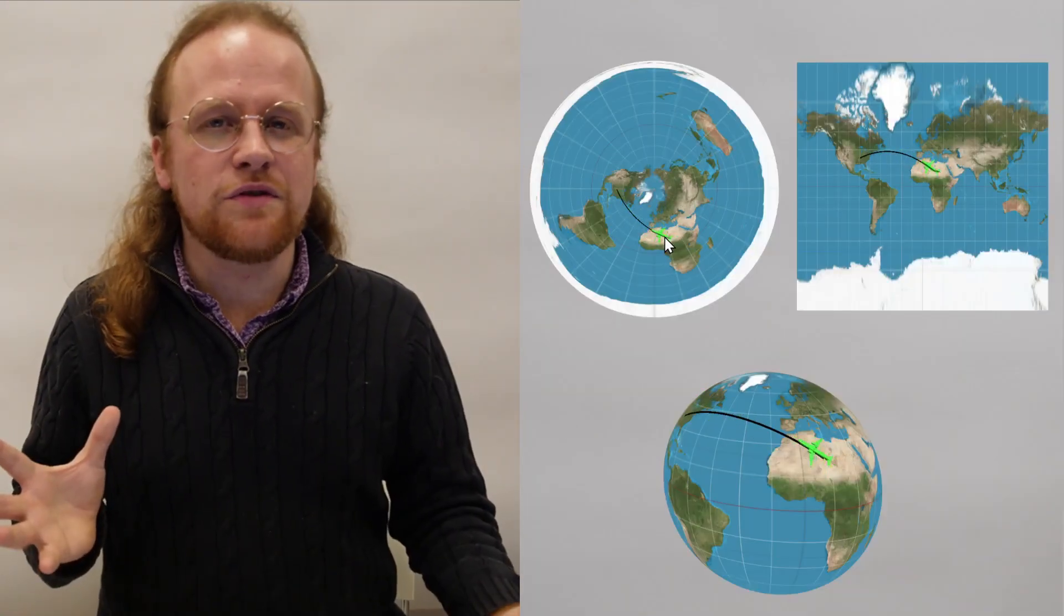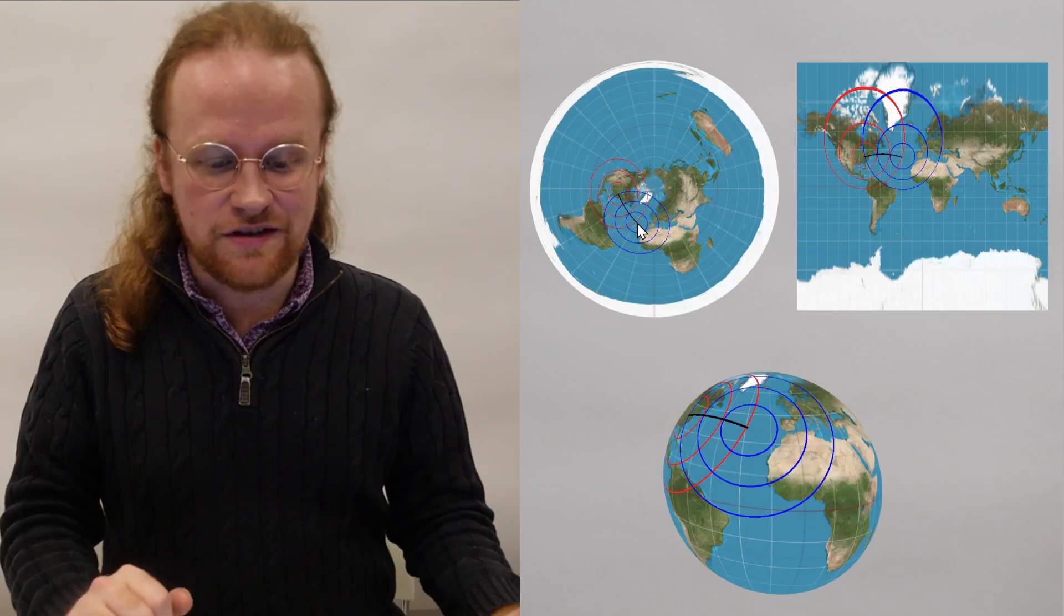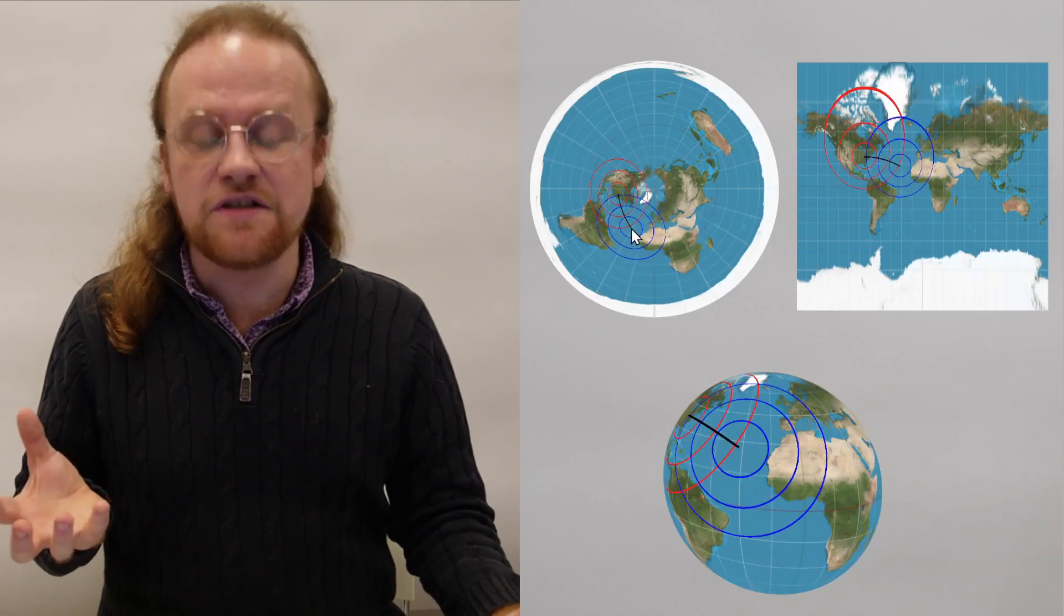Suppose that you didn't have access to the nice globe but you still wanted to understand what was going on with funny trajectories like this. One thing that would be useful to you would be circles.